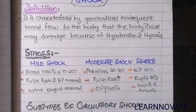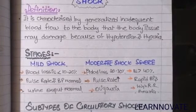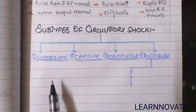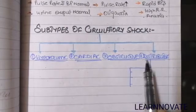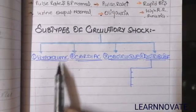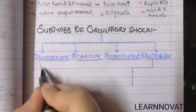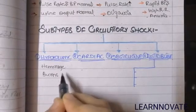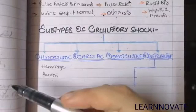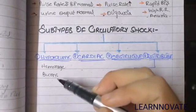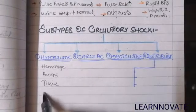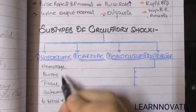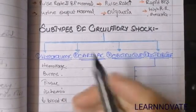There are four types of circulatory shock. The first is hypovolemic shock. As the name suggests, hypovolemia occurs in conditions of haemorrhage or increased blood loss. In haemorrhage or burns, there is a loss of plasma from body fluids causing decreased blood volume, decreased filling pressure of the heart, tissue ischemia, and ultimately tissue death.